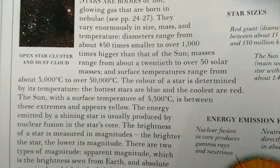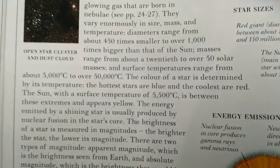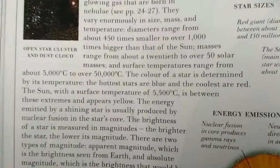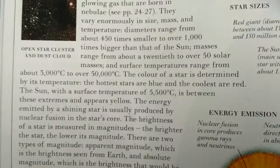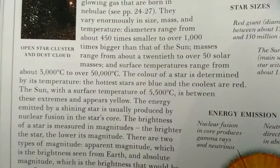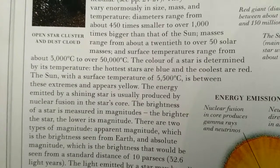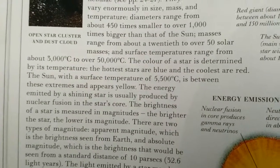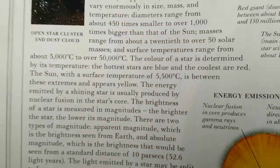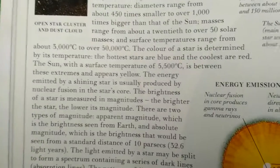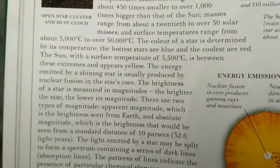The color of the star is determined by its temperature. The hottest stars are blue and the coolest are red. The Sun, with a surface temperature of 5,005 degrees Celsius, is between these extremes.